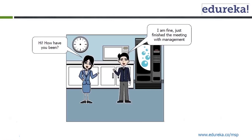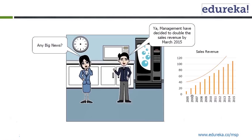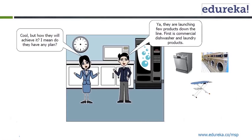She says, any big news? He says, yes, management has decided to double the sales revenue by March 2015. So you can see that you are in 2005 and by 2015 you need to double the revenue.